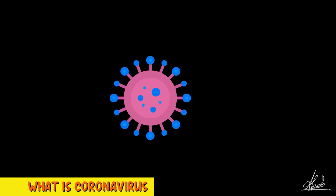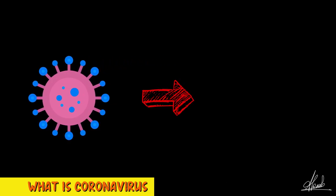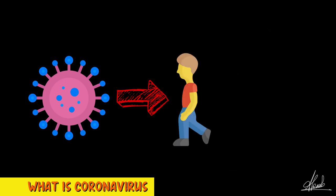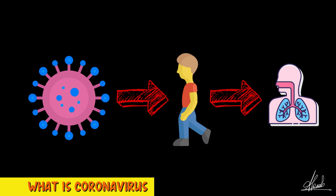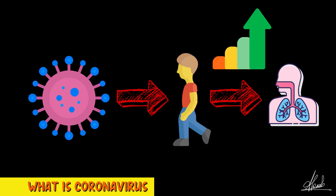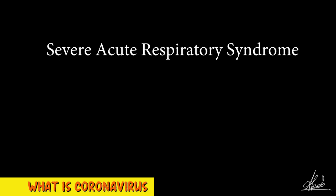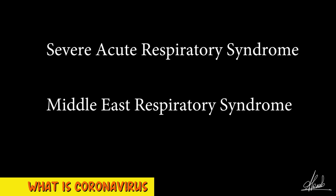Starting off with the coronavirus: coronaviruses are a group of related viruses that cause disease in birds as well as mammals. In humans, coronavirus causes respiratory tract infections, which can range from mild — like the common cold — to some lethal cases, such as SARS or MERS, which are Severe Acute Respiratory Syndrome and Middle East Respiratory Syndrome, and also the new disease, COVID-19.